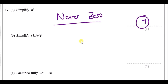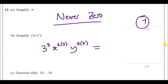Part b: simplify (3x²y⁵)³. Raise every factor to the power of three: 3 cubed equals 27, x² gets an extra power of three giving x⁶, and y⁵ gets an extra power of three giving y¹⁵. The simplified answer is 27x⁶y¹⁵.